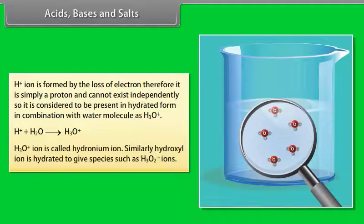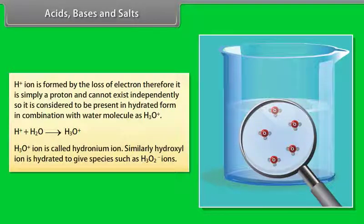H₃O⁺ ion is called the hydronium ion. Similarly, the hydroxyl ion is hydrated to give species such as H₃O₂⁻ ions.